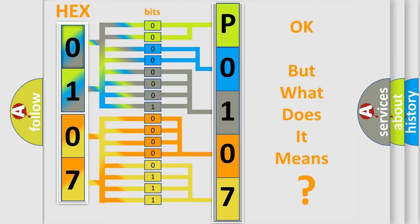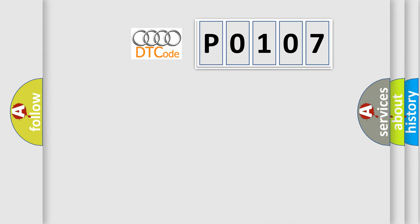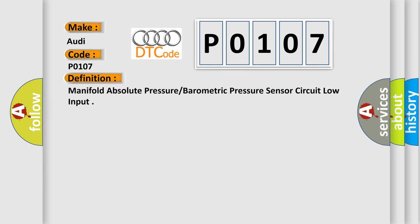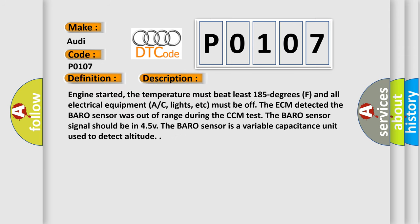We now know how the diagnostic tool translates received information into a more comprehensible format. The number itself does not make sense if we cannot assign meaning to what it actually expresses. So, what does the diagnostic trouble code P0107 interpret specifically for Audi? The basic definition is: Manifold Absolute Pressure / Barometric Pressure Sensor Circuit Low Input.